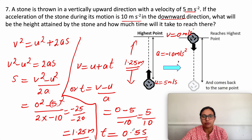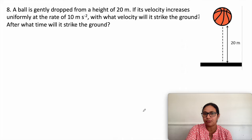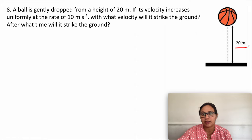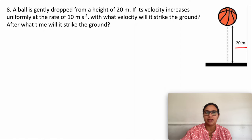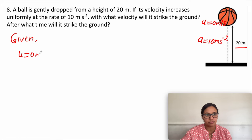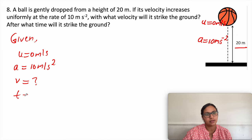Next question: a ball is dropped from a height of 20 meter. If its velocity increases uniformly at the rate of 10 meter per second square, with what velocity will it strike the ground and after what time? The ball is dropped so initial velocity is zero, acceleration is 10 m/s² downward, s is 20 meter. We need to find final velocity and time.